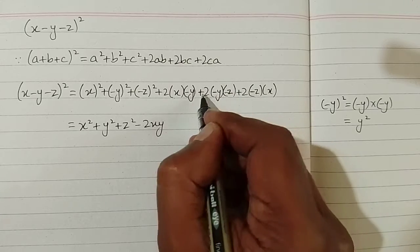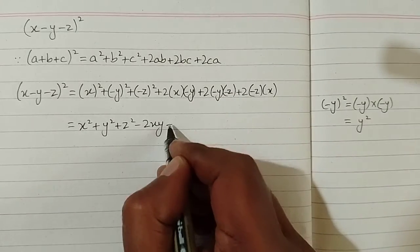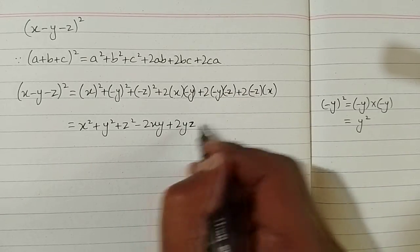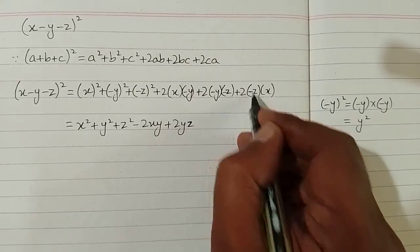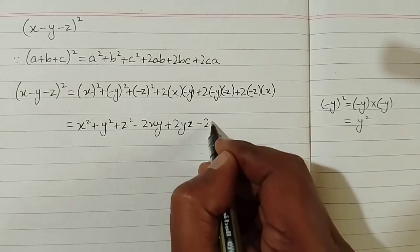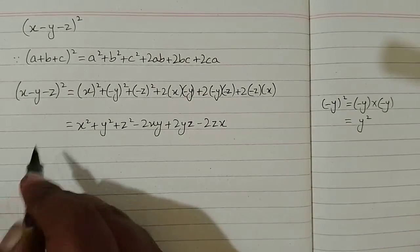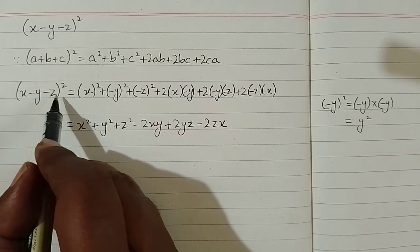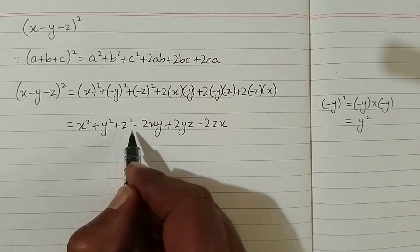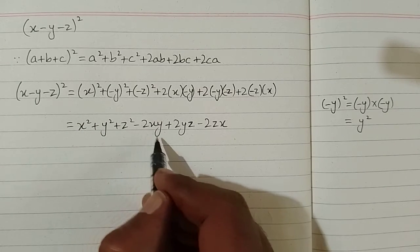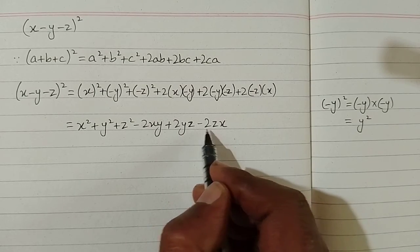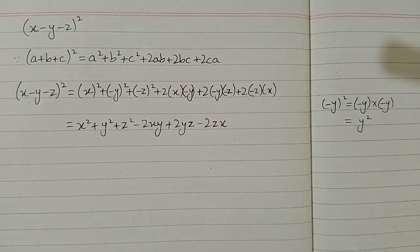Then plus 2 times x times minus y gives minus 2xy. For 2bc, minus y times minus z gives plus 2yz. For 2ca, minus z times x gives minus 2zx. So x minus y minus z whole square is equal to x square plus y square plus z square minus 2xy plus 2yz minus 2zx.